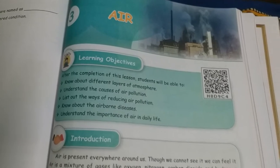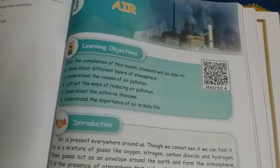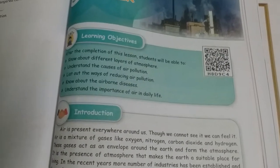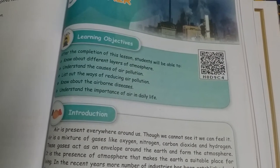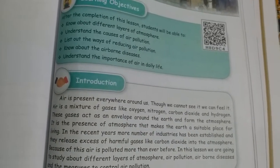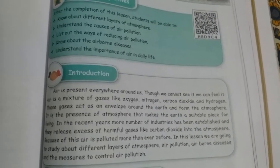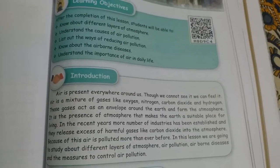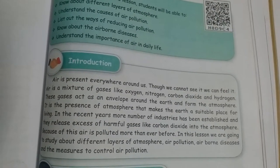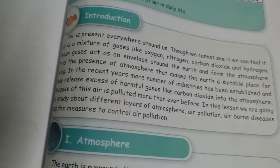Good evening children. Today we are going to learn science, standard five, term 3, third lesson. In this lesson we are going to learn about the different layers of the atmosphere, causes of air pollution, ways of reducing air pollution, airborne diseases, and the importance of air in our daily lives. You know that air is very important for us — it is present everywhere. We breathe in oxygen and exhale carbon dioxide.